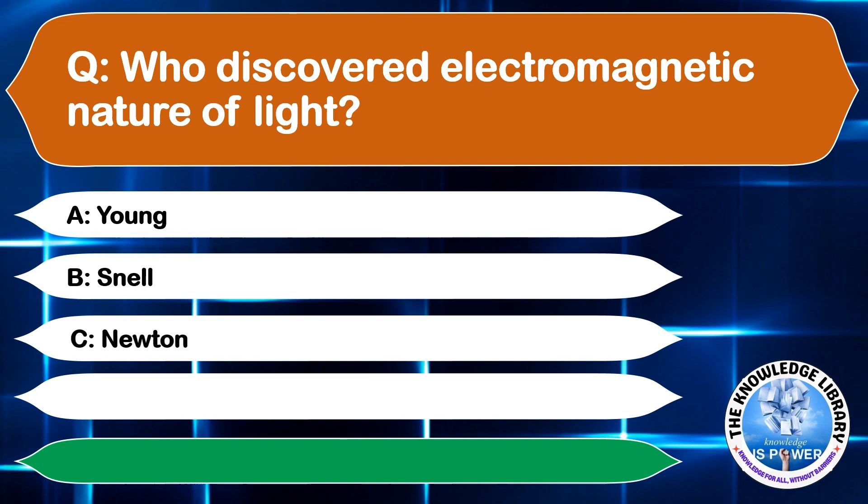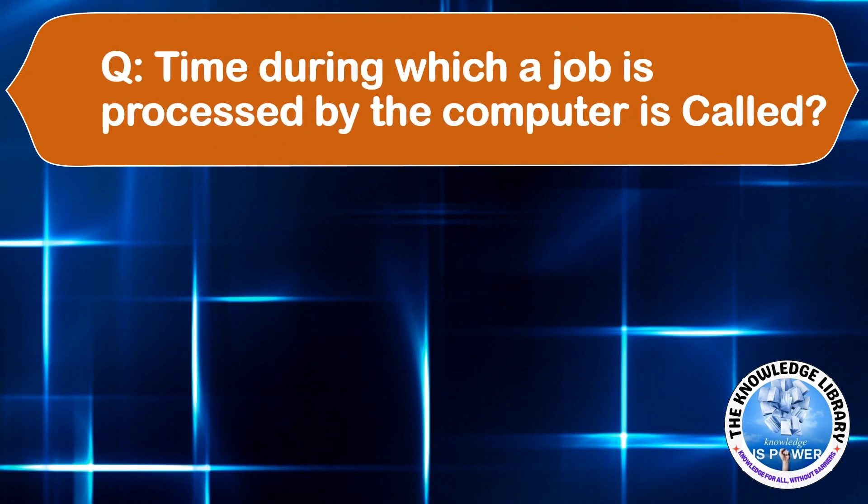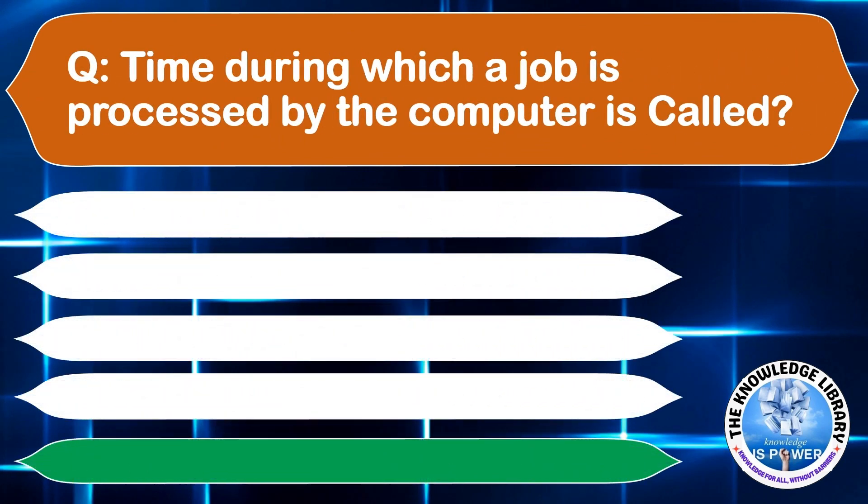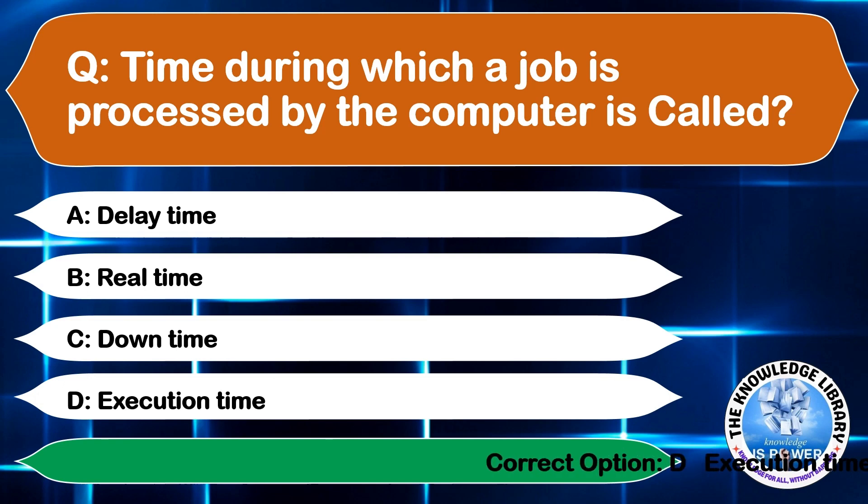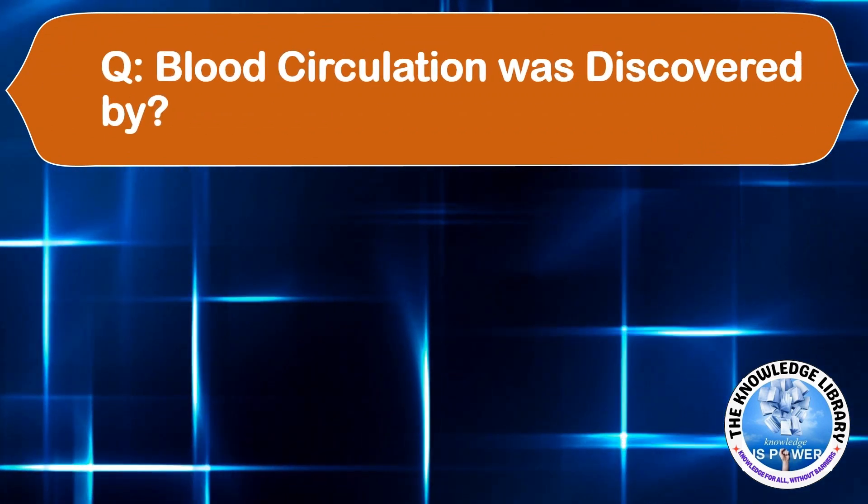Time during which a job is processed by the computer is called: A: Delay time, B: Real time, C: Downtime, D: Execution time. The correct answer is option D, Execution time.